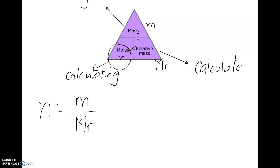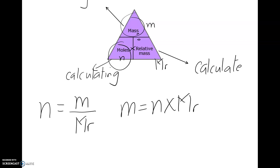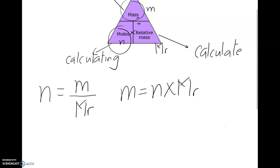Now let's look at the mass. To get mass: m is equal to moles times relative formula mass, n times Mr. Mr is something we need to calculate using the elements and number of atoms in the formula.